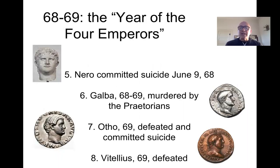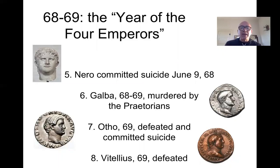Now, you might have noticed that I mentioned that Vespasian was the ninth emperor. That means there was a gap between the Julio-Claudians and the ascension of the Flavian clan to the imperial throne. Remember that in the year 68, Nero — the last of the Julio-Claudians — committed suicide, ending that dynasty that ruled the empire for the first decades of its existence. And then there was in fact this year known as the year of the four emperors — a power struggle for the control of the state.